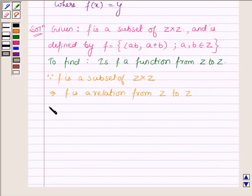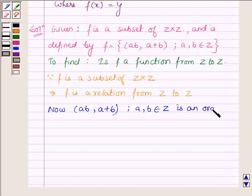Now (ab, a+b) such that a, b belongs to Z is an ordered pair of f.